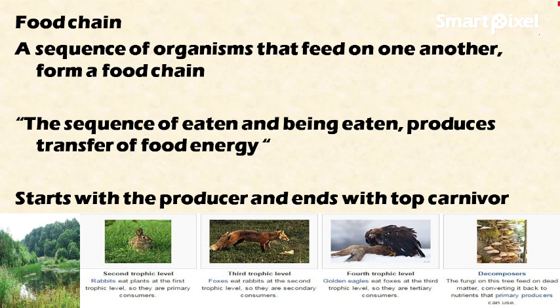Welcome, friends. In this video, let's discuss the food chain and food web. This is part of the functions of ecosystem in the environment and ecology series. A food chain is a sequence of organisms that feed on one another. This sequence of eating and being eaten produces the transfer of food energy.